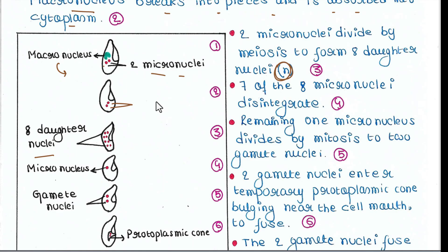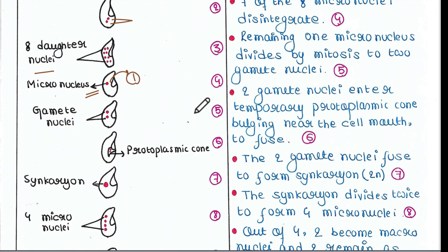Seven of the eight micronuclei disintegrate, leaving only one. This remaining one micronucleus divides by mitosis to produce two gamete nuclei. So now we have two gamete nuclei.